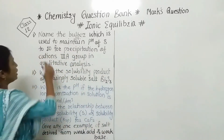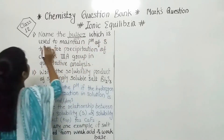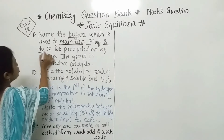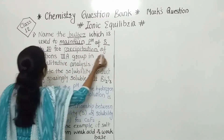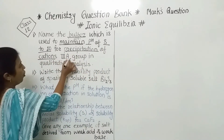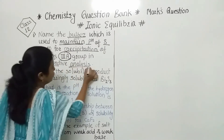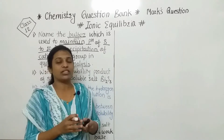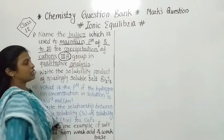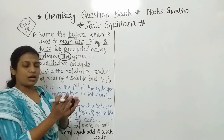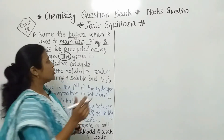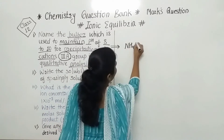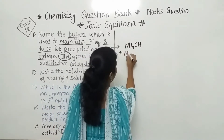What is the first question? Name the buffer which is used to maintain the pH 8 to 10 for the precipitation of cations of group 3A in a qualitative analysis. In this case, the cation radicals which we have detected in practical — we have to use this buffer solution. So which buffer do we have to use? Here we are using ammonium hydroxide and ammonium chloride.